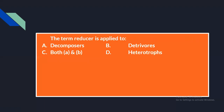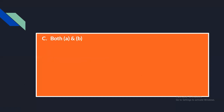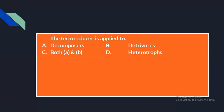The next question: the term 'reducer' is applied to — option A: decomposers, option B: detritivores, option C: both A and B, option D: heterotrophs. The answer is both A and B — decomposers and detritivores. We know what decomposers are and we also know what detritivores are.